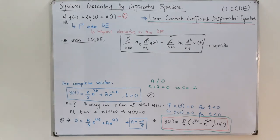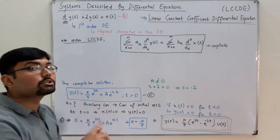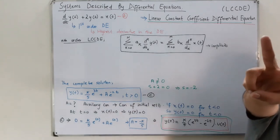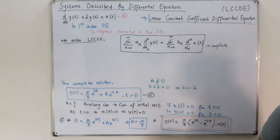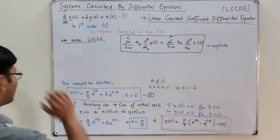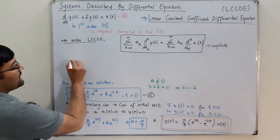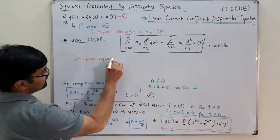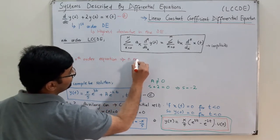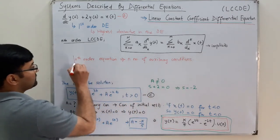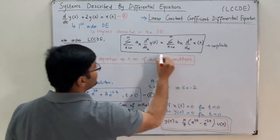The auxiliary condition for an nth order linear constant coefficient equation: for a first order equation we had one constant so we needed one auxiliary condition. A second order equation has two constants and needs two auxiliary conditions. A third order equation needs three conditions. So an nth order equation requires n auxiliary conditions. This is a very important point.